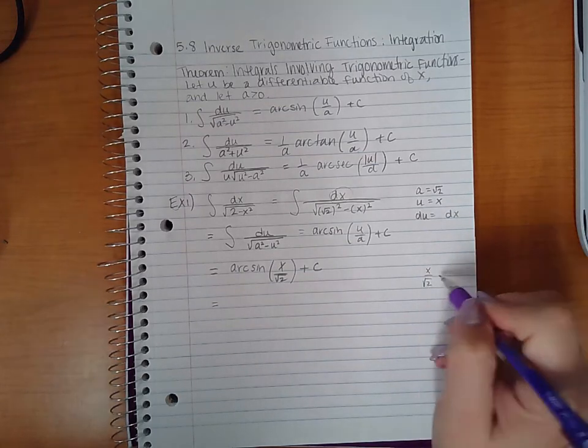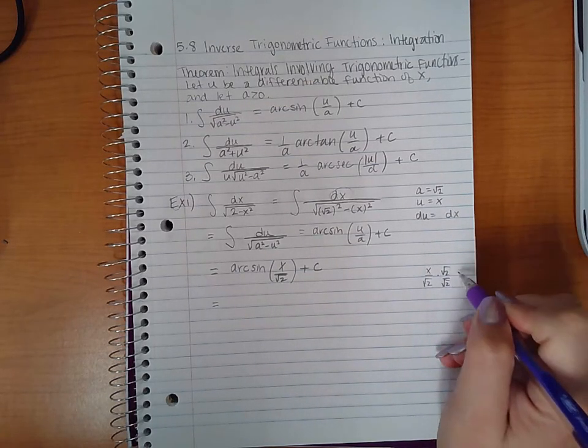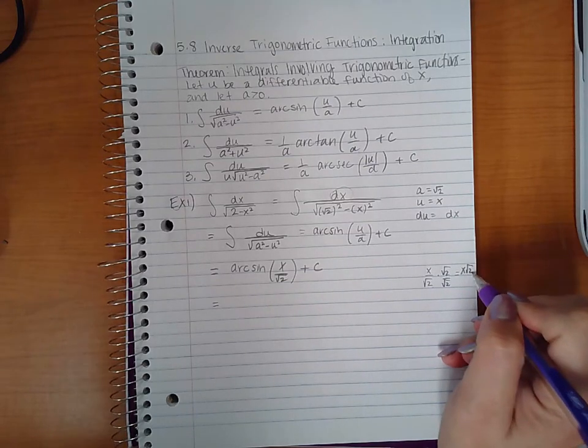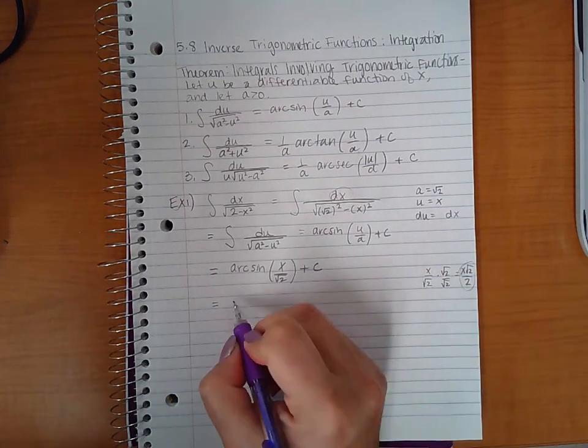However, when it comes to radicals, the formal answer should have rationalized the denominator. So if I take x over the square root of two and I multiply by the square root of two over the square root of two, we get x square root of two over two and this is the rationalized expression.